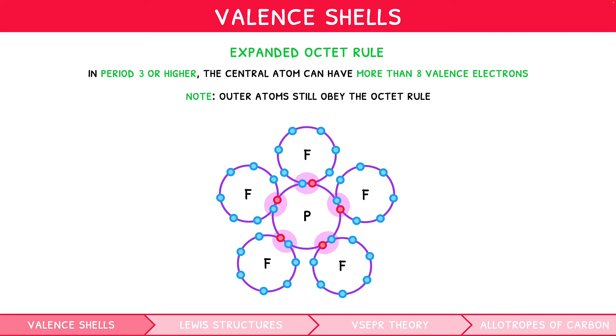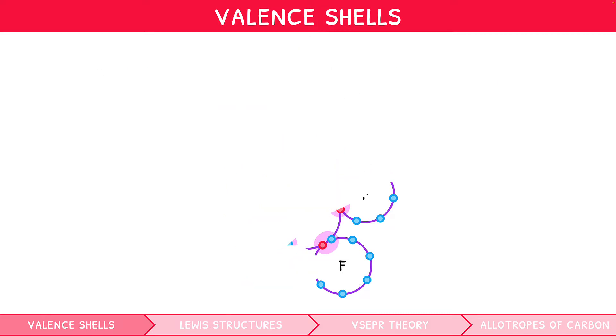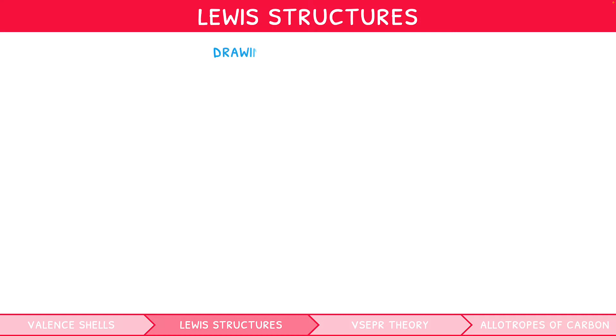For your exam, you cannot represent covalent structures like this. Instead, you need to be comfortable using what are known as Lewis structures. To draw a Lewis structure, there are 5 distinct steps. Let's go through them using PHCl2 as an example.